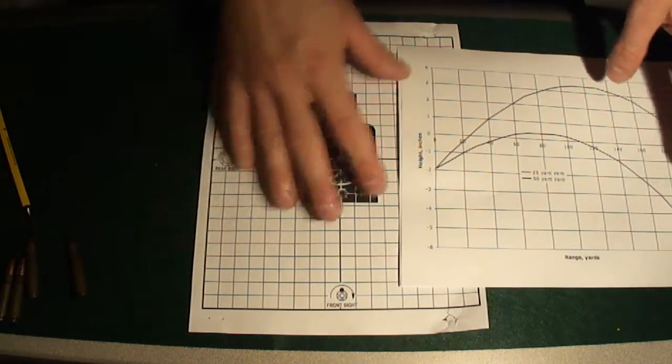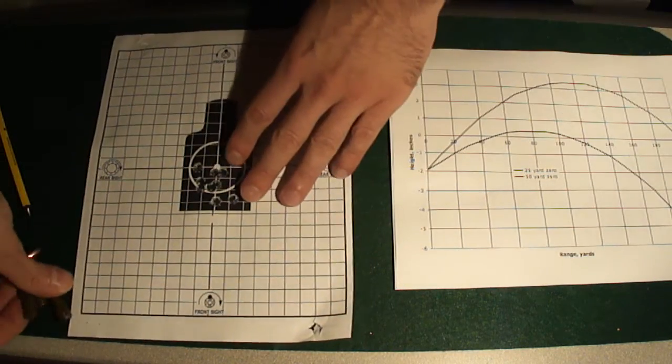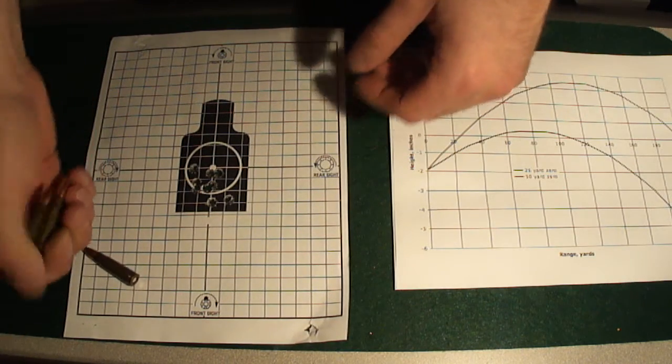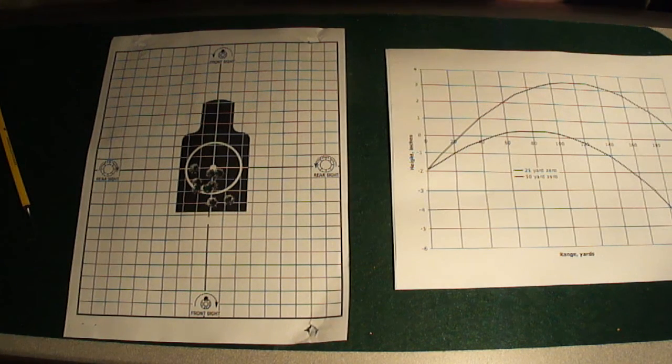Alright, folks ask me is the VZ-58 accurate? Is it more accurate than an AK? Less accurate than an AK? Well, first things first is how can you tell, right?